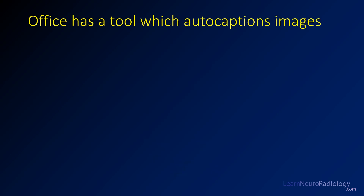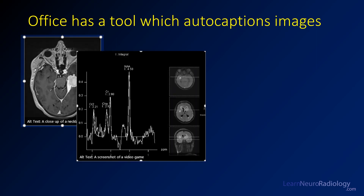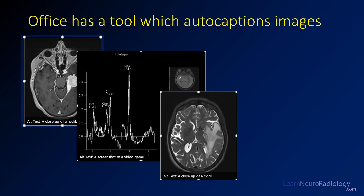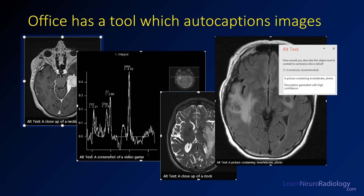Office auto-captions described the images I was putting in for this lecture. This meningioma was captioned as a close-up of a necklace. This spectroscopy was called a screenshot of a video game — which I guess is a little bit closer, since radiology is a little bit like a video game. Another was labeled a close-up of a clock, and another a picture containing an invertebrate. Well, I think we're probably safe for a little bit — though what's most disturbing is that it generated these with high confidence.